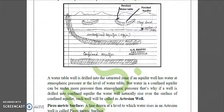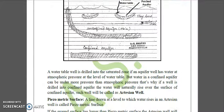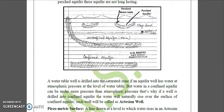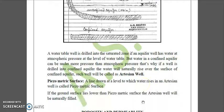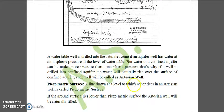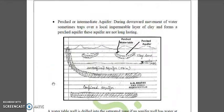A water table well is drilled into the saturated zone where the aquifer well has water at atmospheric pressure at the level of the water table. But water in a confined aquifer can be under more pressure than atmospheric pressure. So if a well is drilled into a confined aquifer, the water will naturally rise due to pressure — such a well is called an artesian well.